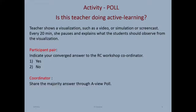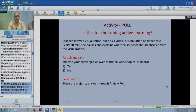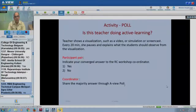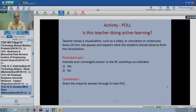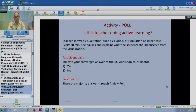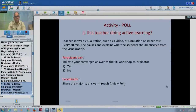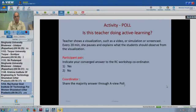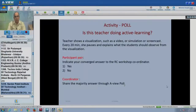Each participant pair should indicate your converged answer to the RC coordinator — either yes or no — and the coordinator can share the majority answer through the AView chat window. Looking at the answers: I'm seeing yes, yes, no, no, no, no — a bunch of no's. Some are saying yes, some are saying no, but there seem to be a lot more no's than yes's.